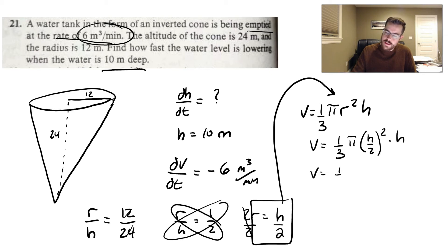So if we simplify that down, we get (1/3)π h squared over 4 times h, which simply becomes (1/12)πh³.